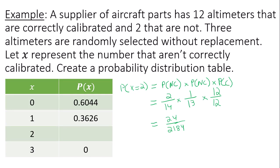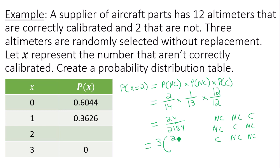This is just one of a few ways you can get two altimeters that are not calibrated. The not-calibrated altimeters might be the first and second pulled, the first and third, or the last two pulled. So there are three different ways you could obtain two altimeters that are not calibrated. Take your answer — 3 times 24 over 2,184 — and the answer you get is 0.0330. So everything is to four decimal places.